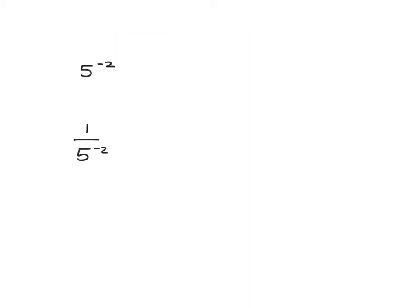So 5 to the negative 2: again, that negative in the exponent just simply tells you you're dealing with 1 over. So what we've got here is 1 over 5 squared, which is 1 over 25.